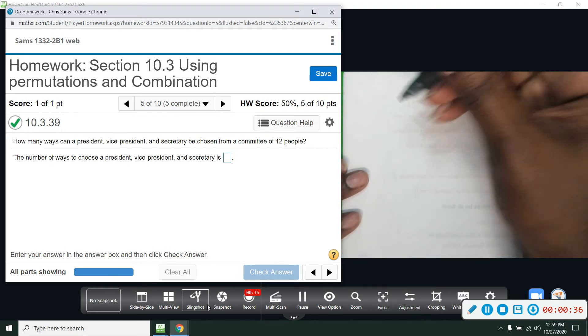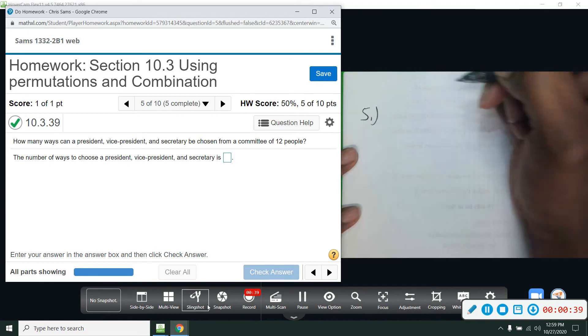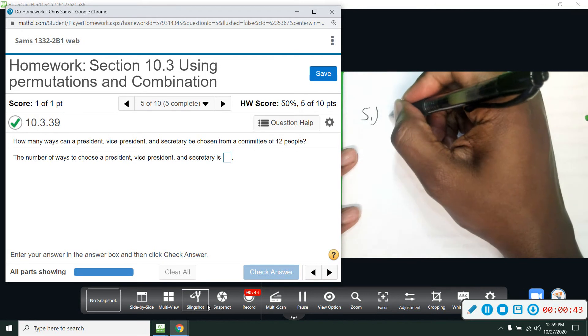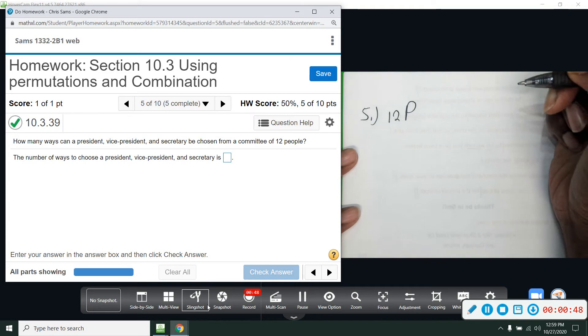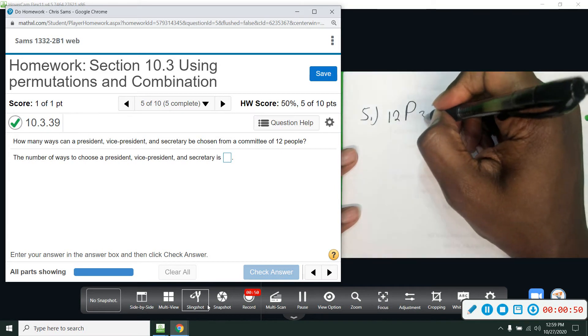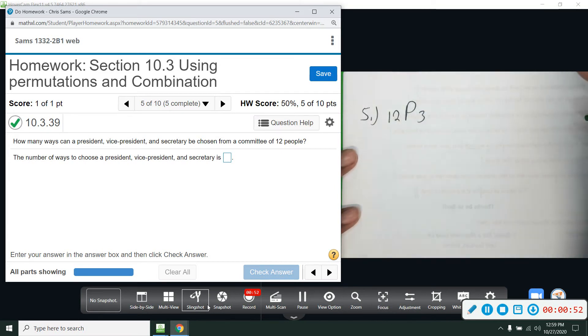So in this example, we have to determine do we use permutations or combinations? And based on what I've just mentioned, you're going to want to use permutations. And so you have 12 people, you're going to be picking three of them: president, vice president, and secretary.